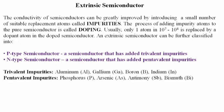The conductivity of semiconductors can be greatly modified or improved by introducing a small number of suitable replacement atoms called impurities. The process of adding impure atoms to a pure semiconductor is called doping. Usually, only one atom in 10 to the power 7 or 10 to the power 8 is replaced by a dopant atom in the doped semiconductor. An extrinsic semiconductor can be further classified into P-type and N-type.